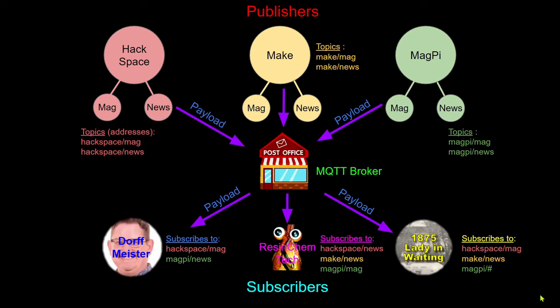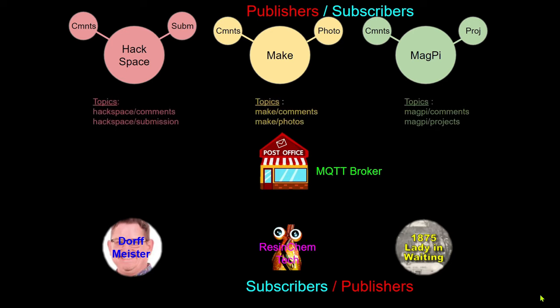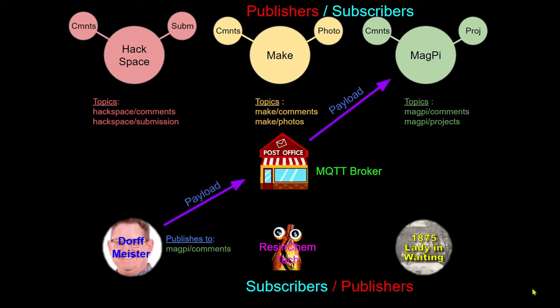Where things get a little confusing is that publishers can also be subscribers and subscribers can also be publishers. For example, each magazine could also subscribe to a comment section or a submission/photo topic. If Dorfmeister wants to send a comment to Magpie, he just addresses it with 'magpie/comments' and sends it to the broker, which passes that message to Magpie's comments area.